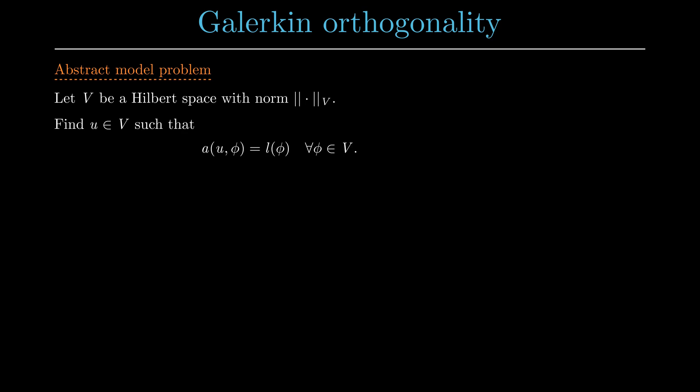For the definition, we require v to be a Hilbert space with a given norm. Then the abstract model problem reads: Find u in v such that a(u, φ) equals l(φ) for all test functions φ in v.